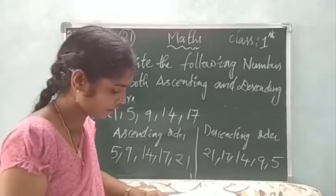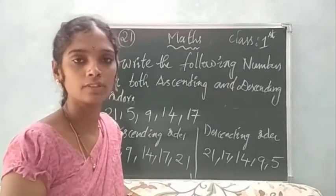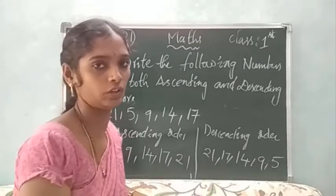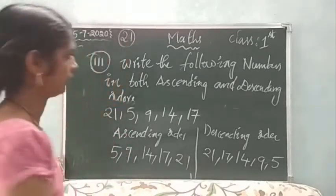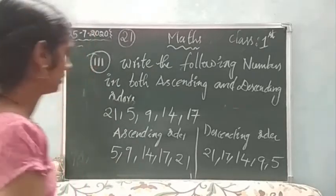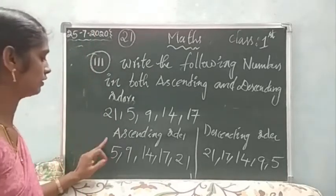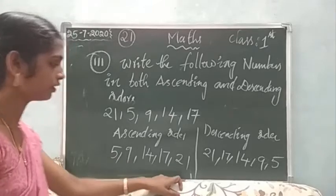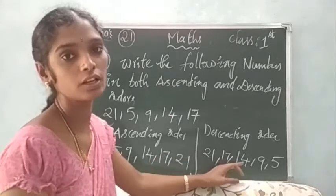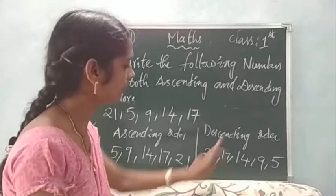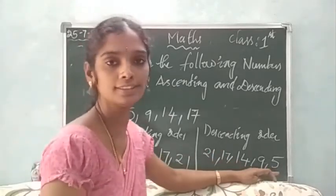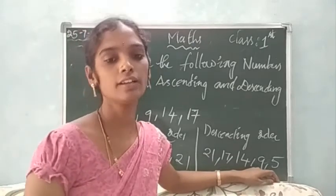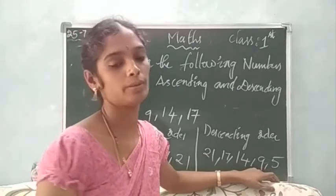I will give you two problems. Then you will arrange in ascending order and descending order. Okay. First, start with small numbers — don't start with big numbers. This is the big number. Start with the smallest number. Okay, I understand. I will give you two problems.